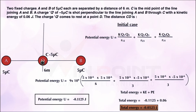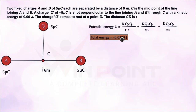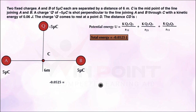In the second case, because of this kinetic energy the charge is moving to a point D, and at point D it is at rest. As the charge moves, the kinetic energy is converting into potential energy. We apply the law of conservation of energy, which states that total energy is always constant. Since the charge is at rest at D, there is no kinetic energy — all kinetic energy has been converted into potential energy, which must equal the total energy of minus 0.0525 joule.